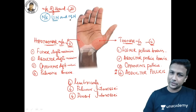Students often confuse carpal tunnel syndrome with cubital tunnel syndrome. Carpal tunnel syndrome → median nerve. Cubital tunnel syndrome → ulnar nerve. Guyon's Canal syndrome (recently asked in MCI) → also ulnar nerve. Now, the last and very important concept: the anatomical snuff box.